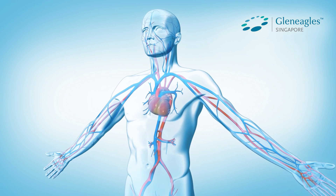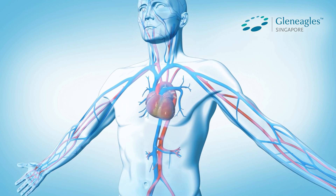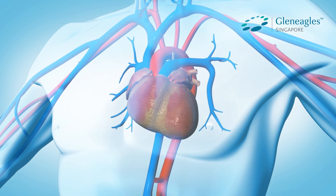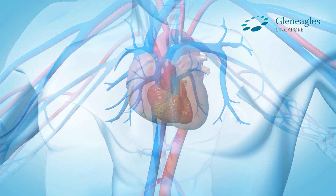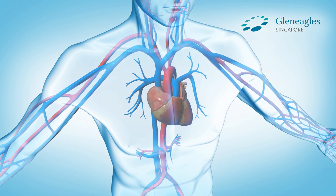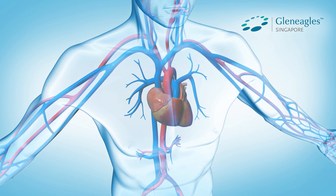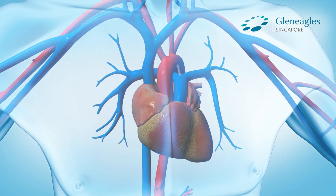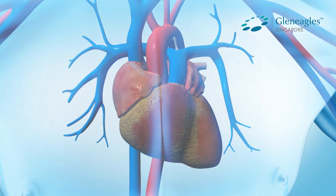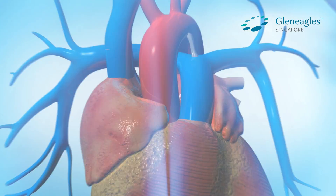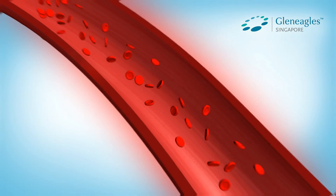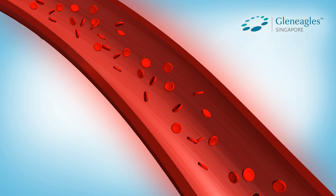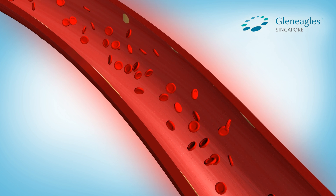In 2014, coronary artery disease accounted for 16% of all deaths in Singapore. The heart supplies oxygen and nutrients to the body, and the coronary arteries supply blood to the heart muscle. Coronary artery disease is the narrowing or blockage of the coronary artery caused by atherosclerosis.